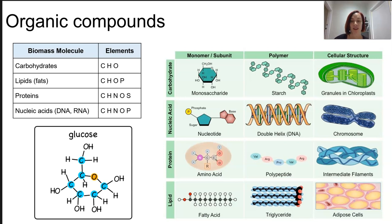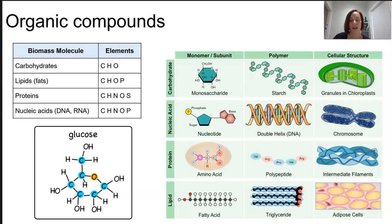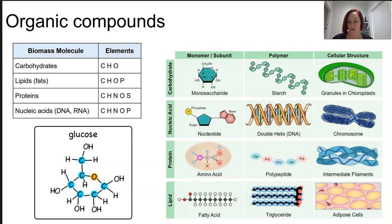Organic compounds like glucose, which is a carbohydrate, contain really high-energy bonds. When photosynthetic organisms capture light energy, they convert it into chemical energy like glucose, and the energy is stored in those bonds. We access this energy by breaking down the bonds and releasing that energy, turning it into something usable — ATP — which we do during cellular respiration.